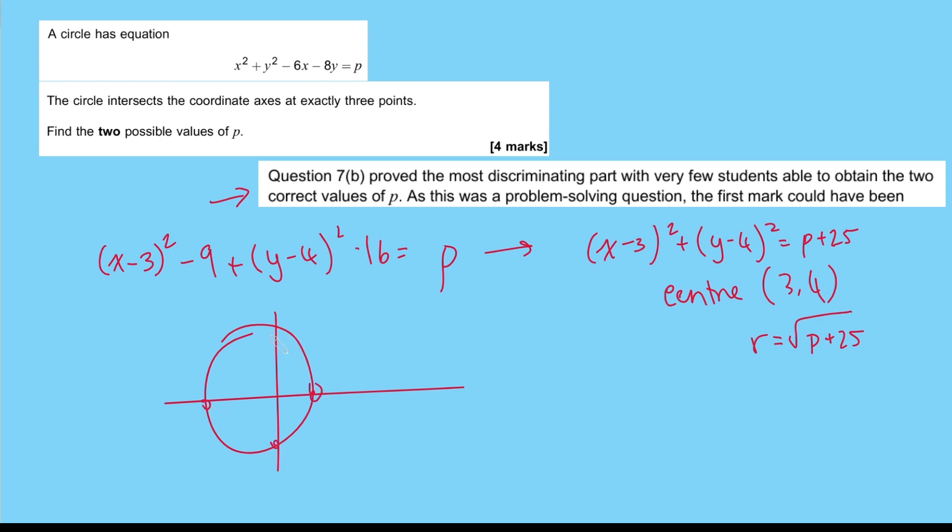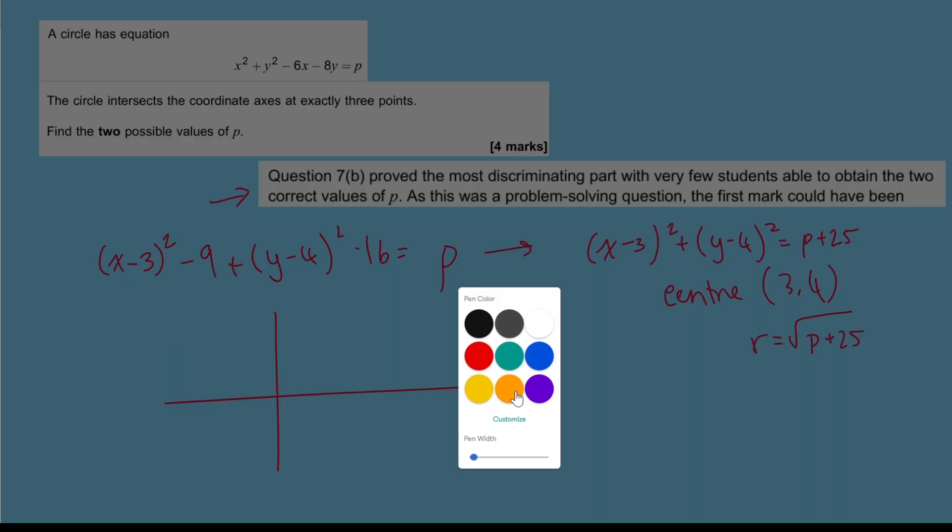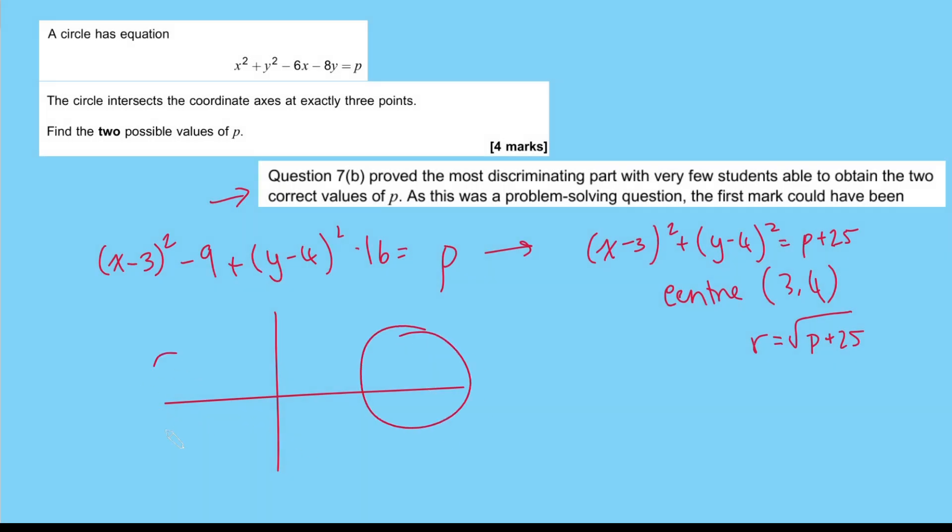or potentially we could have just intersecting twice. So if the circle is entirely on one side, and then we realize, if you want it to be exactly three points of intersection, we probably need it to be a tangent to one of the axes.